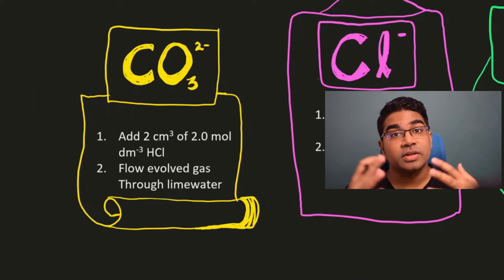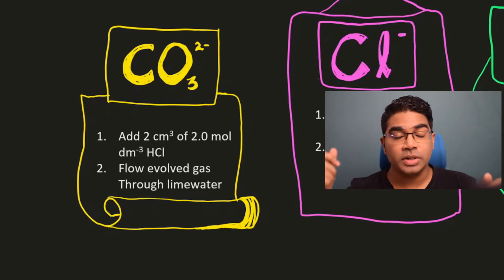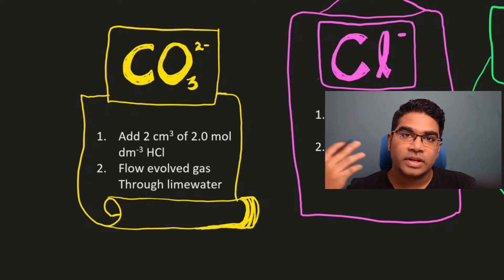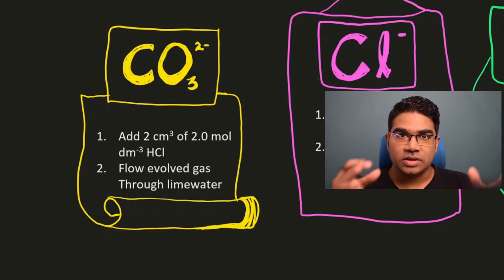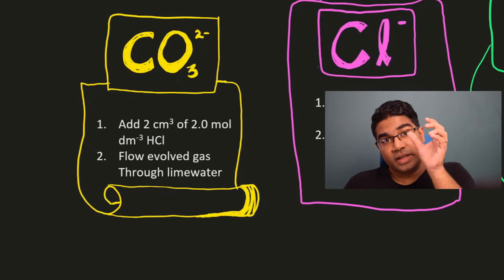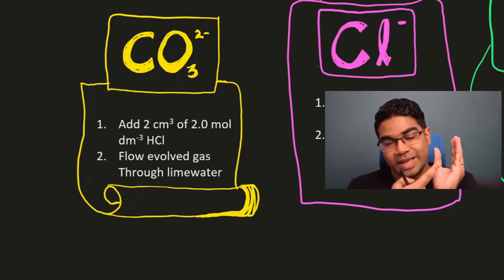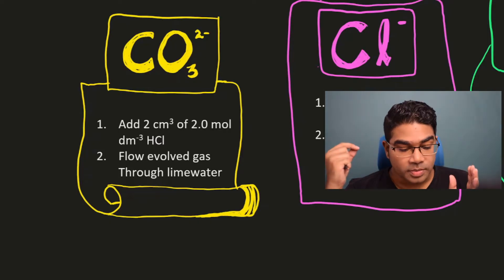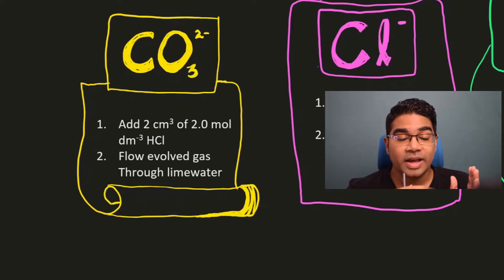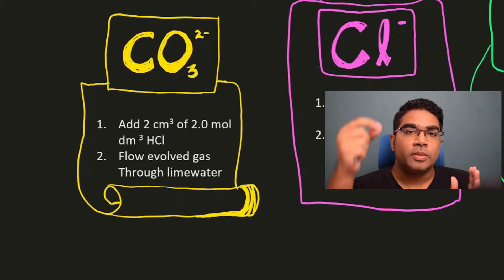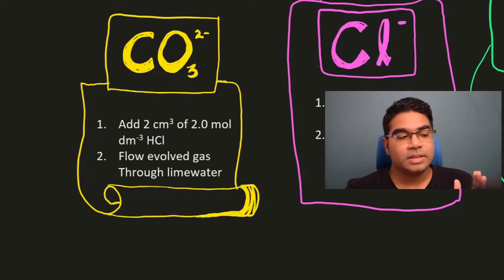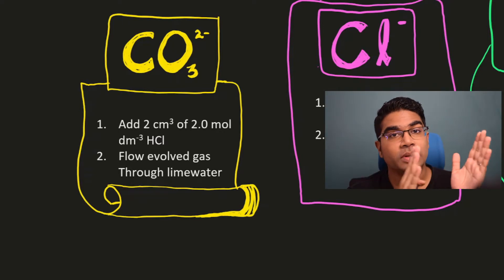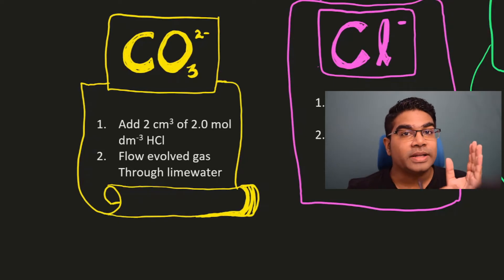Here you need to understand the reaction between carbonate and acids — I've done a video on that as well, I'll leave the link in the description. The acid reacts with the carbonate to form carbon dioxide. Carbon dioxide is released and what is left is salt and water. So remember, we are starting out with a test sample; we don't know what the ion is in the test sample. All we have to do is add 2 cm³ of 2 mol per dm³ hydrochloric acid. Any acid would do, but when you add hydrochloric acid, carbon dioxide will be released from the reaction between the acid and the carbonate — more specifically between the hydrogen ion and the carbonate ion. Carbon dioxide gas will be released.